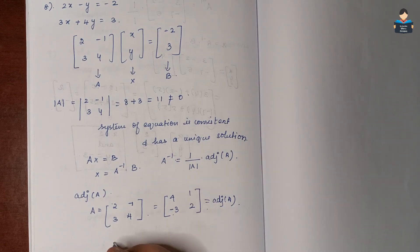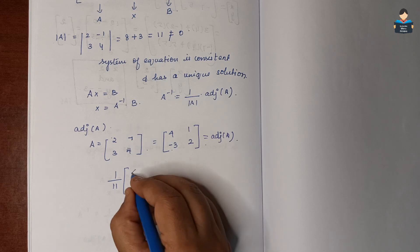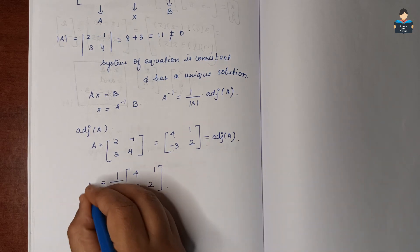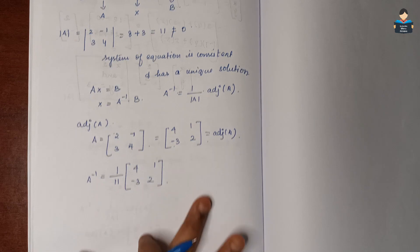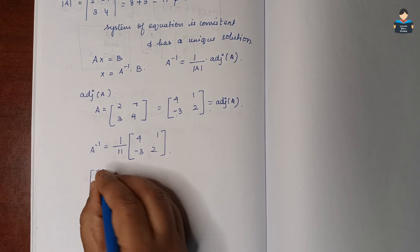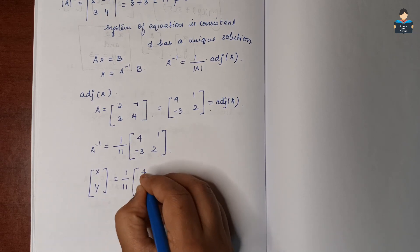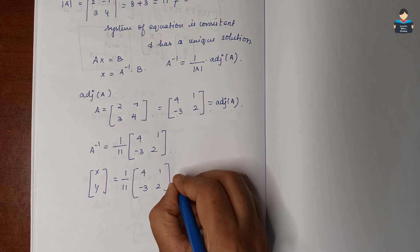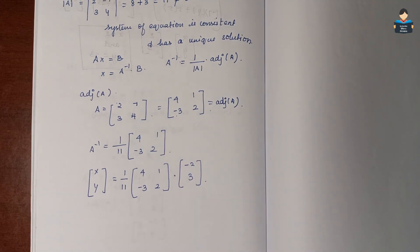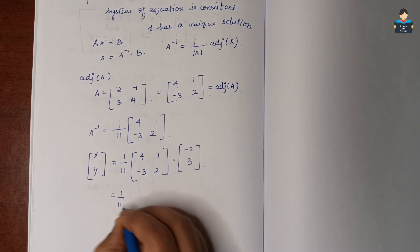Substituting, A inverse is equal to 1 over 11 into [4, 1; -3, 2]. Now for X, we substitute: X is [x; y] equals A inverse into B, which is 1 over 11 times [4, 1; -3, 2] into [-2; 3]. Now we multiply.